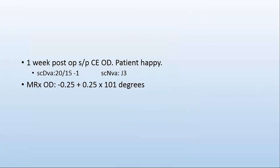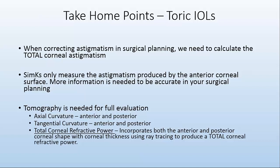The take-home points with this toric case: when correcting astigmatism in surgical planning, we need to calculate the actual total corneal astigmatism and get the right axis. Older devices only measure the anterior corneal surface, so more information is needed to be accurate. Tomography with the total corneal refractive power — incorporating both anterior and posterior corneal shape with corneal thickness using ray tracing — produces the true total corneal refractive power.